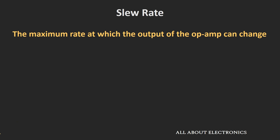The slew rate of the op-amp can be defined as the maximum rate at which the output of the op-amp can change. Or in another way, we can say that how fast the op-amp is able to respond.